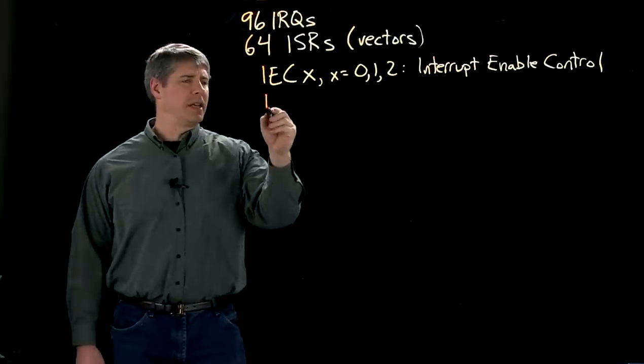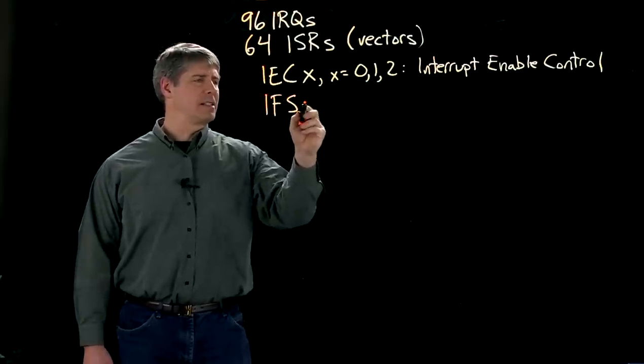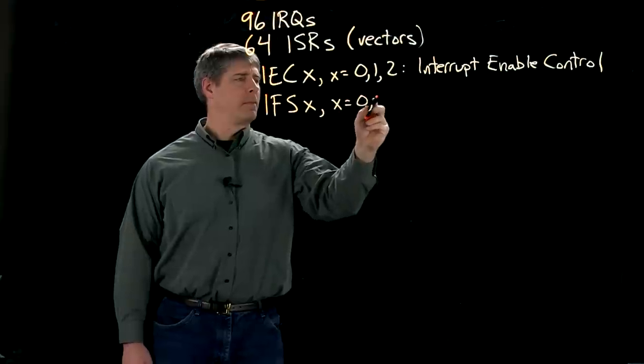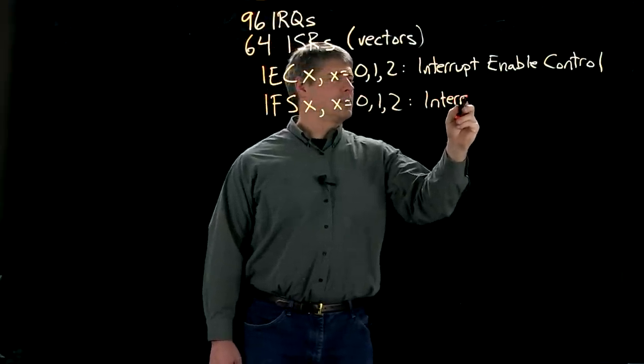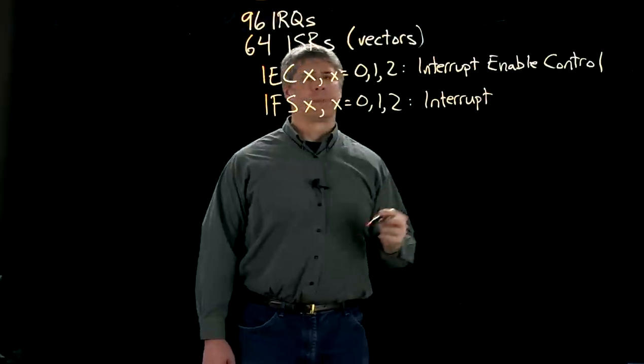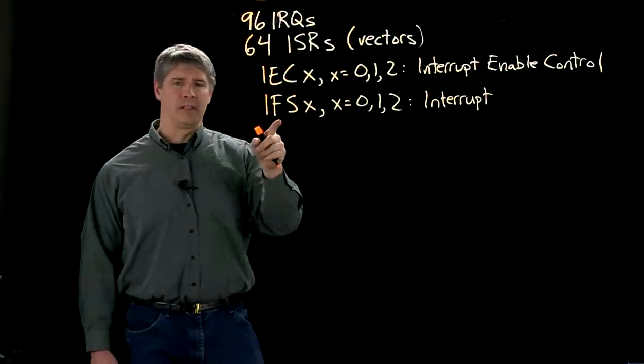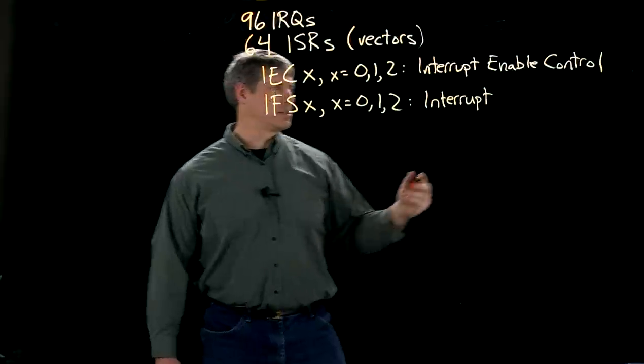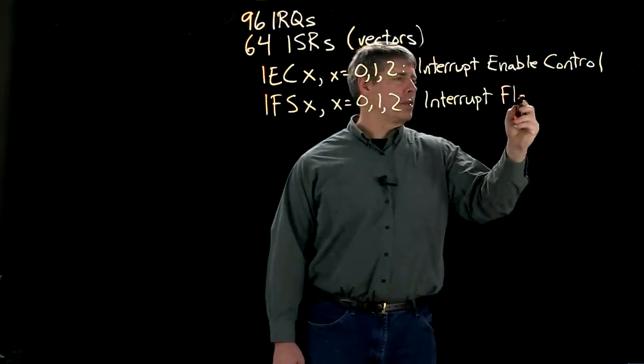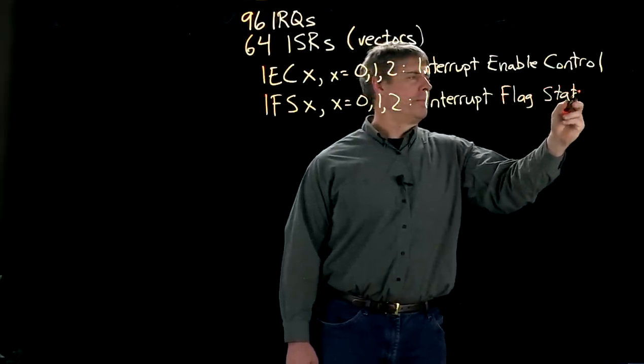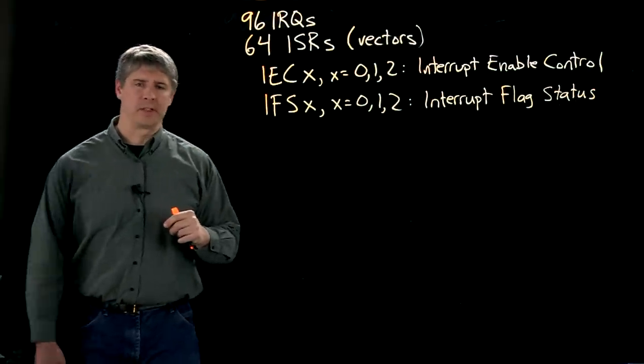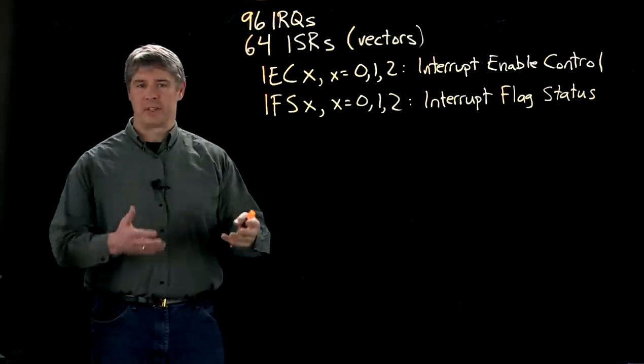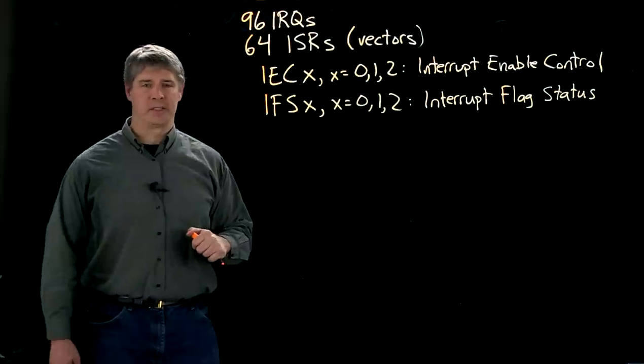We also have the interrupt flag status registers. And these bits correspond to the same bits of the IEC registers, and they tell us whether an interrupt has been requested or not. So if we have a one at the appropriate bit in the registers, it means that an interrupt has been requested. If it's a zero, then none has been requested.